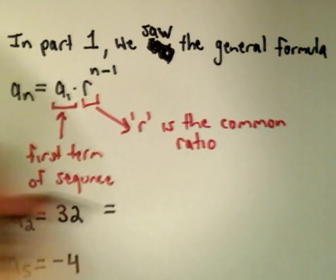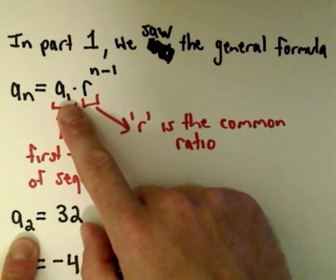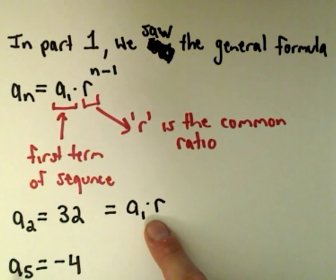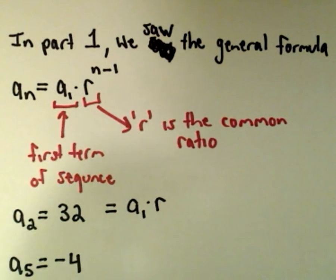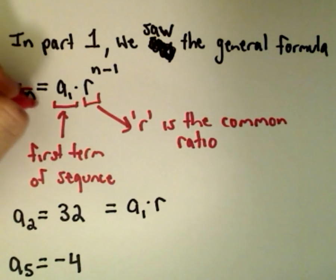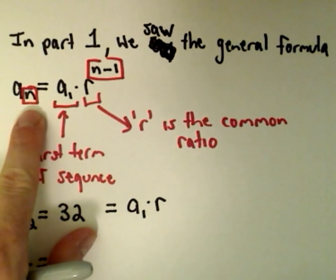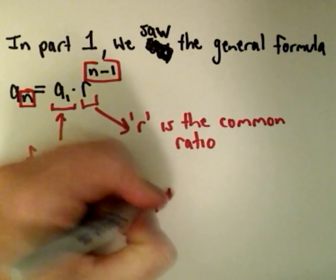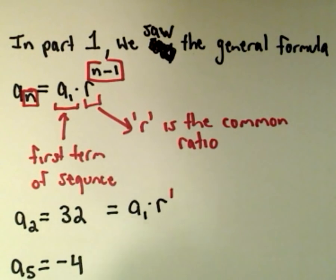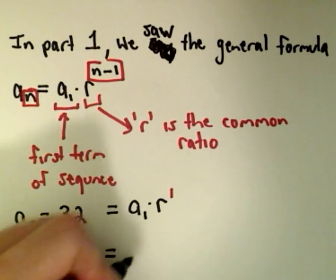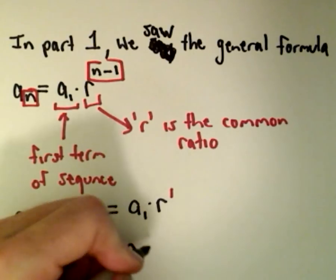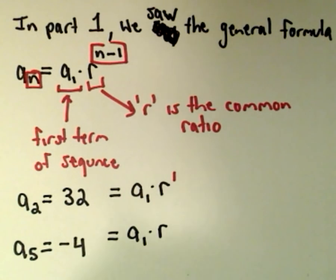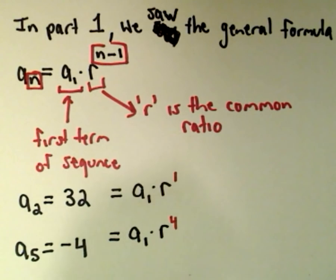I'm going to use the formula for each given term. For a sub 2: that equals a sub 1 times r to the first power, since the subscript is 2 and we take one away to get the exponent of 1. For a sub 5: that's going to be a sub 1 multiplied by r raised to the 4th power, since the subscript is 5 and one less gives us an exponent of 4.